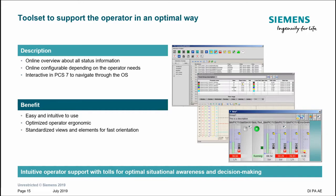APG also builds on existing operator productivity tools in PCS 7 such as the measuring point browser and the trend control, which are the two windows at the back of the free graphics. It also adds the group view, which Dave will soon show. These all allow the operator to easily access several important bits of information consecutively and help them carry out their job more effectively.